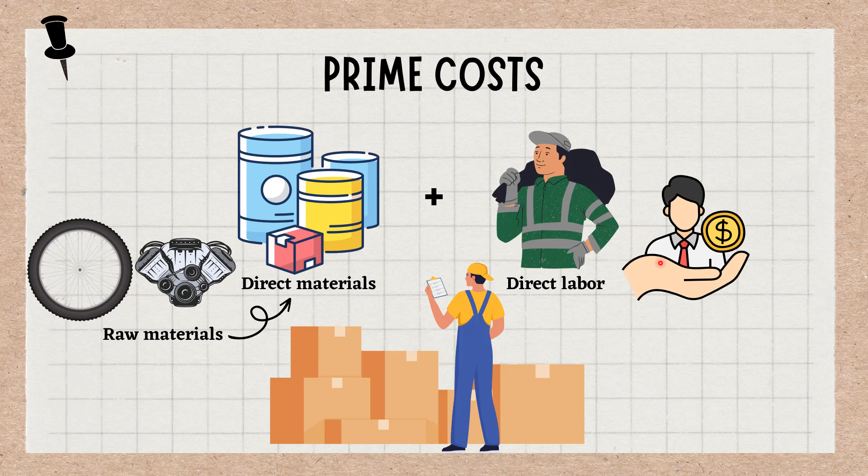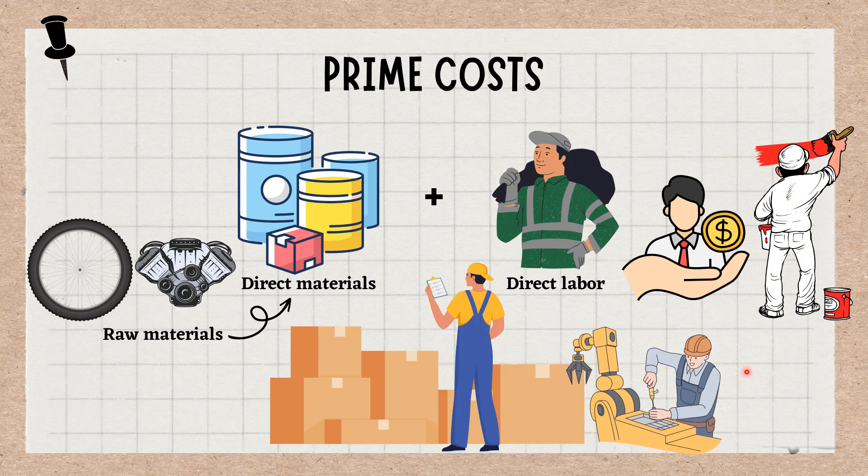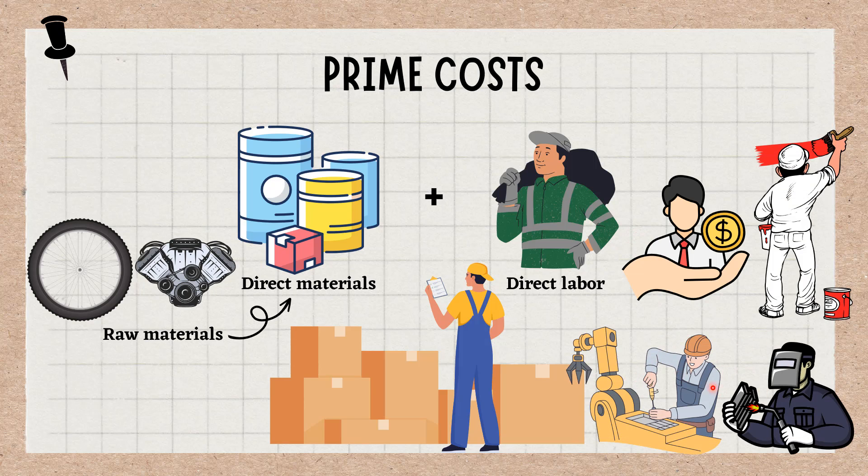Compensation paid to machinists, painters, or welders is common in calculating prime costs.